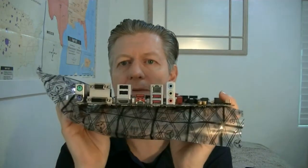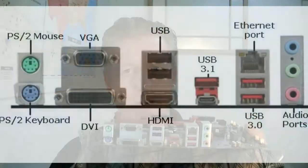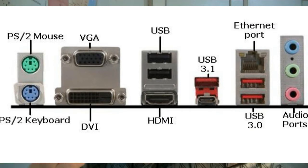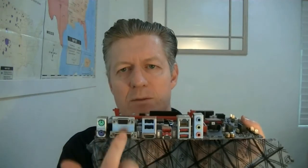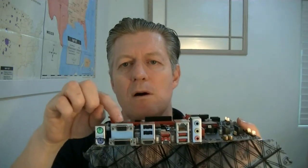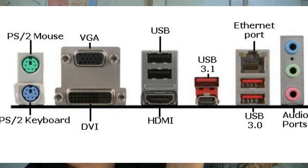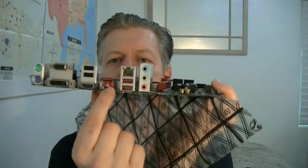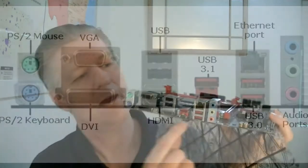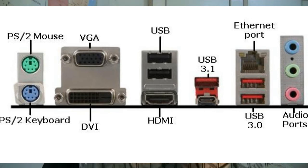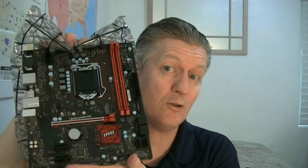Looking at the back of the board, it has a very interesting configuration. It includes PS2 keyboard and mouse ports, VGA and DVI video outputs — VGA for older monitors, DVI is also not the newest — but there is HDMI out. There are also USB ports, USB 3.1, and audio out. It's going to be a fun build when we put this together in class.